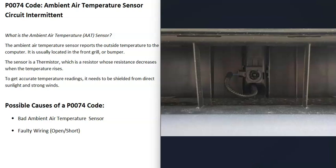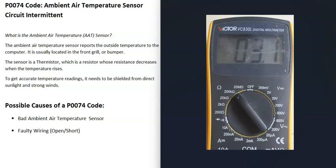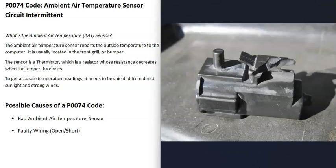These ambient air temperature sensors are called a thermistor, which is a resistor whose resistance changes as the temperature changes. The computer can measure these resistance changes and know what the outside temperature is. If you have a multimeter, you can test that sensor — read the resistance in ohms, then apply heat with a hot hair dryer and see if the resistance changes. You can also look up the rated resistance at a set temperature and see if it matches.